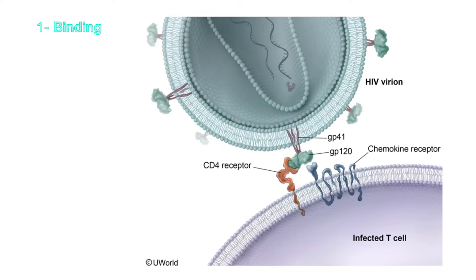The first step in the life cycle of any virus is attachment or binding — it needs to bind to something on the host cell that allows it to get inside. Each virus has tropism, or a preference, for certain types of cells. HIV likes CD4-positive cells, and these are not just T lymphocytes — there are also CD4-positive macrophages and dendritic cells, so other immune cells are included. HIV will bind any cell that has CD4.